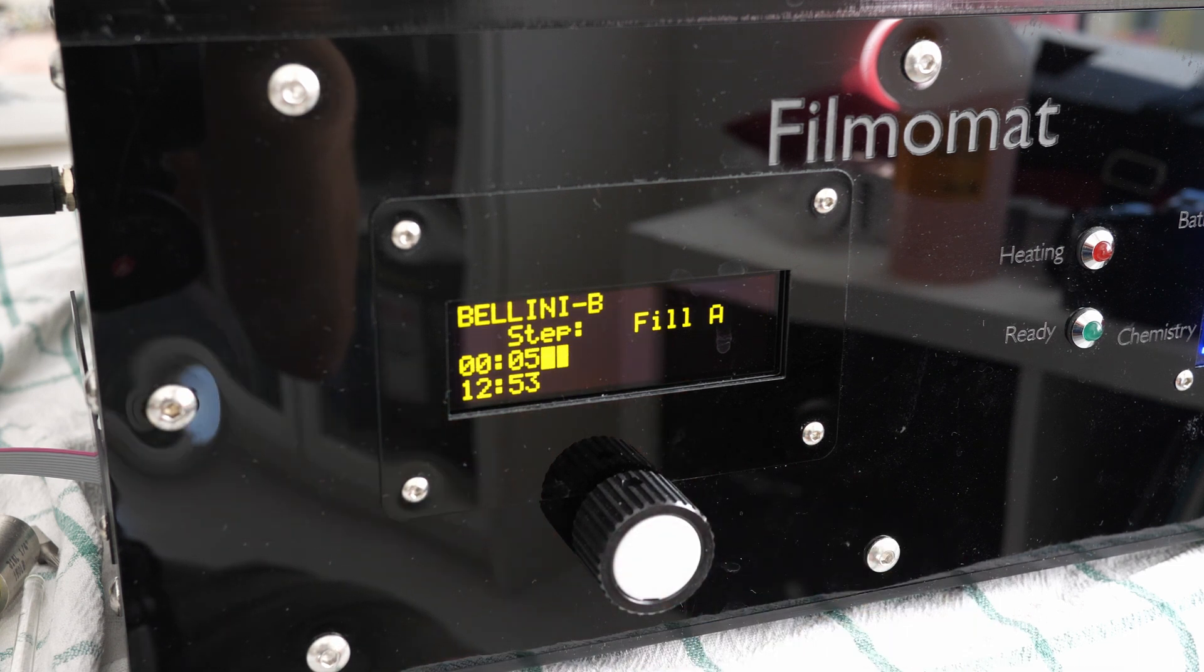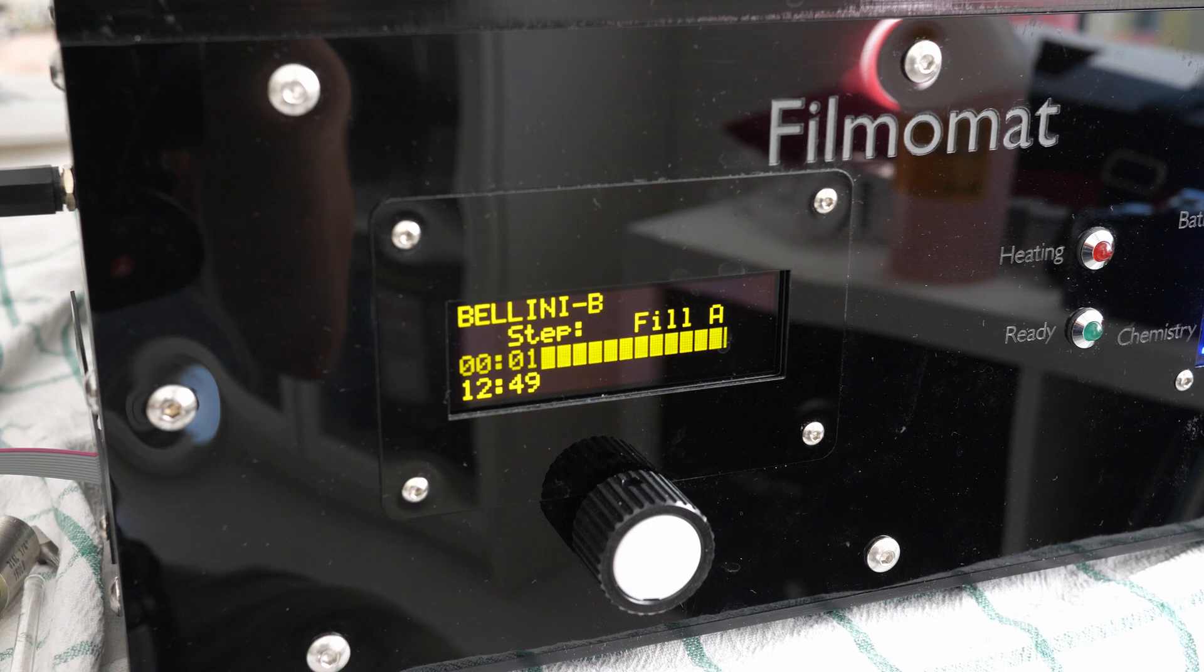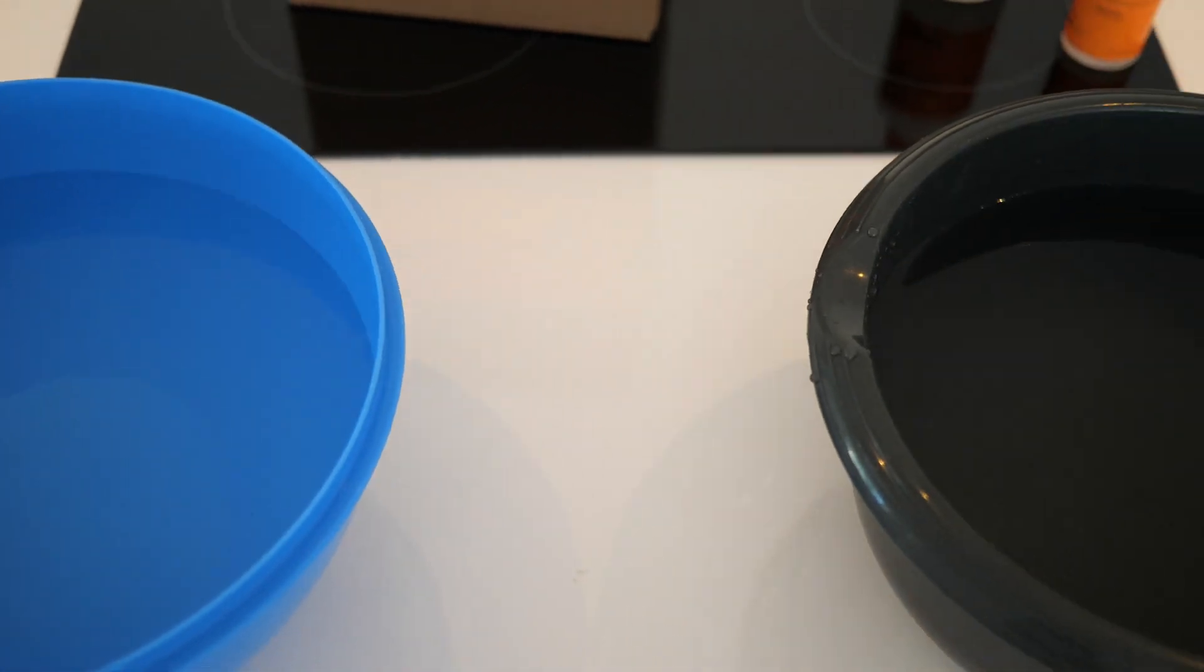The second half again starts with tank A, which now contains the bleach. Once the process is finished, we can take the film out of the tank.